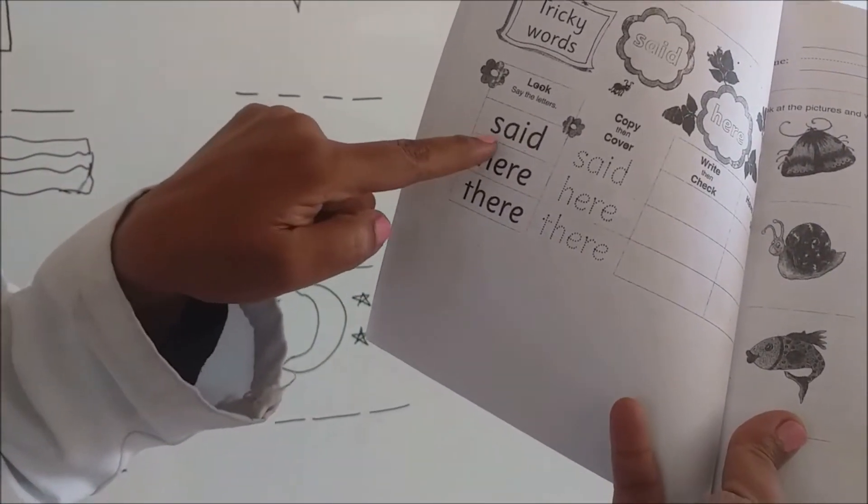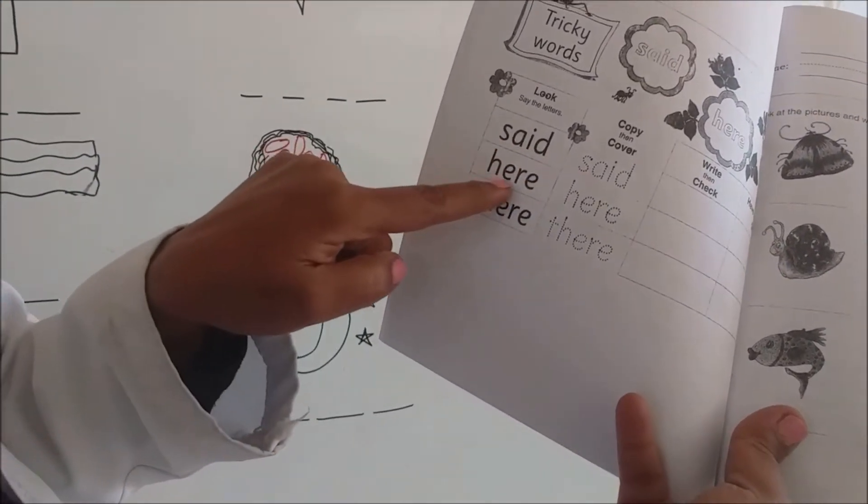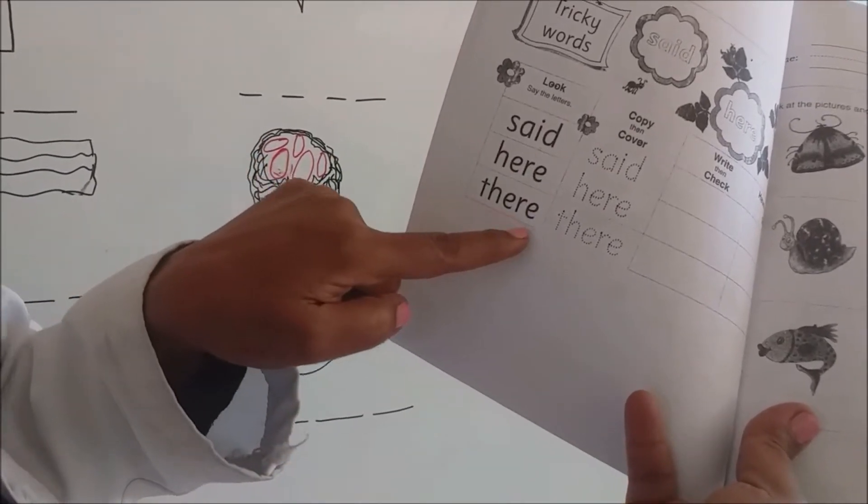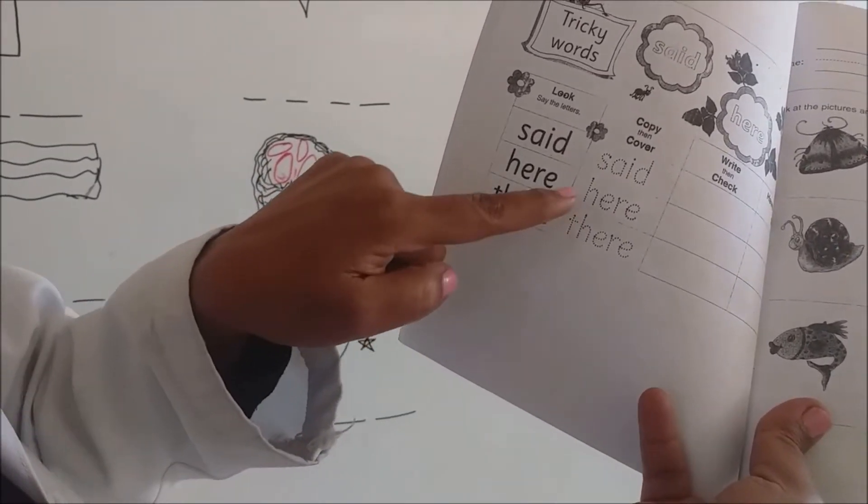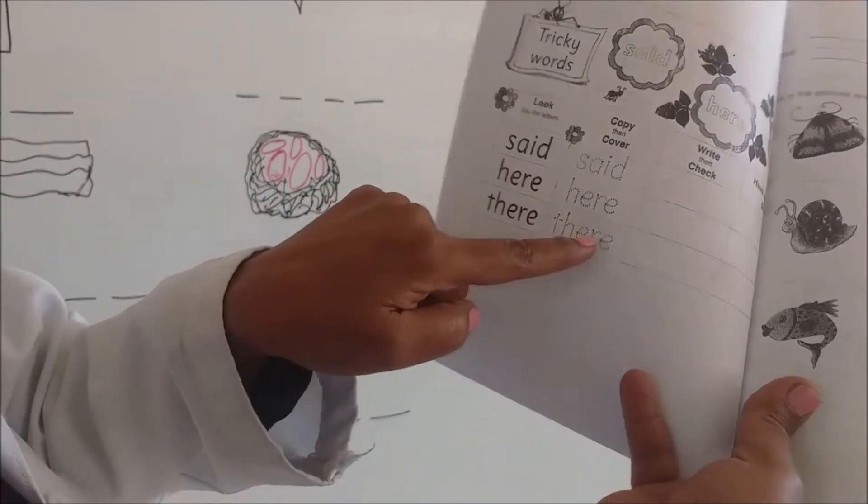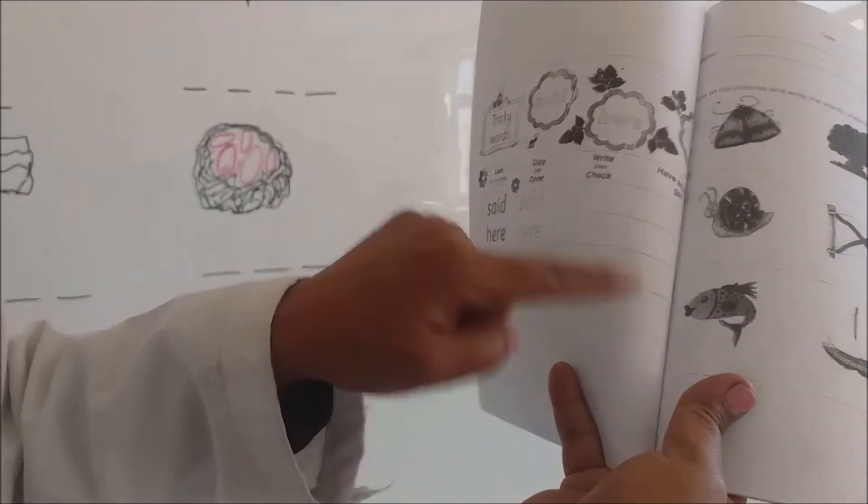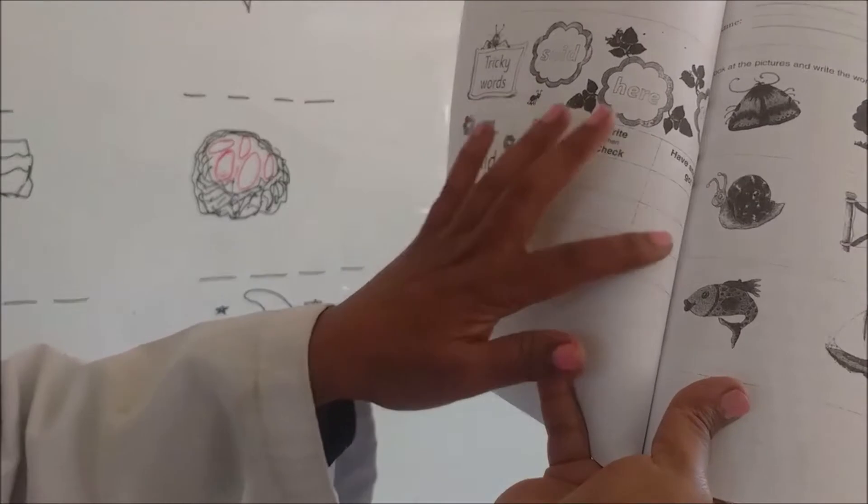Said. Said. Here. Here. There. There. You're going to trace it here, and then you're going to print them. Print them down here. Excellent.